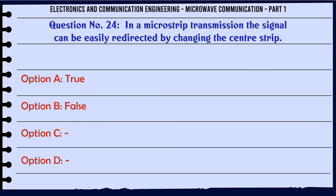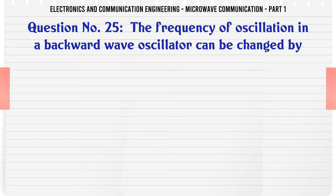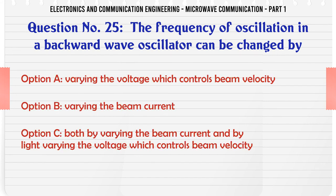In a microstrip transmission the signal can be easily redirected by changing the center strip: A. True, B. False. The correct answer is True.